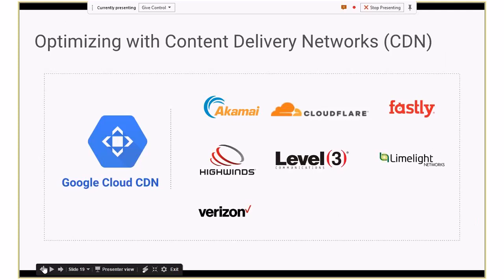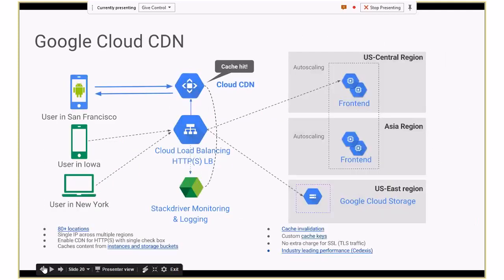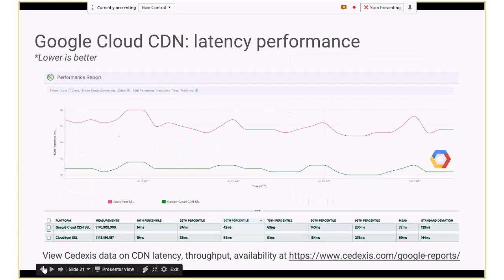Once you're done deploying your VPCs and scaling your apps, the next thing you want to do is optimize. A typical mechanism is caching. It's very similar to the load balancer in that it sits at the edge. I've added links in the slides for all of the latency measurements as well.